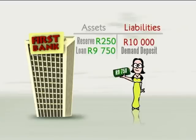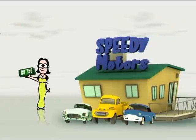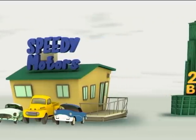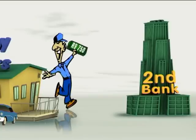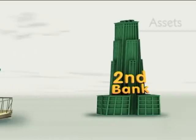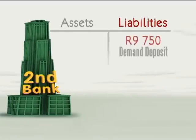Now, Mrs Brown then uses this loan to pay Speedy Motors a down payment for the little car she's buying. Speedy Motors, in turn, deposits this payment in their bank, called Second Bank. Second Bank then creates a demand deposit in their name for the amount of 9,750 Rand. Now, the money supply has changed. Remember, it didn't change with Mr Smith's deposit. But by lending money to Mrs Brown, who paid Speedy, who deposited that 9,750 Rand, a new demand deposit has been created.